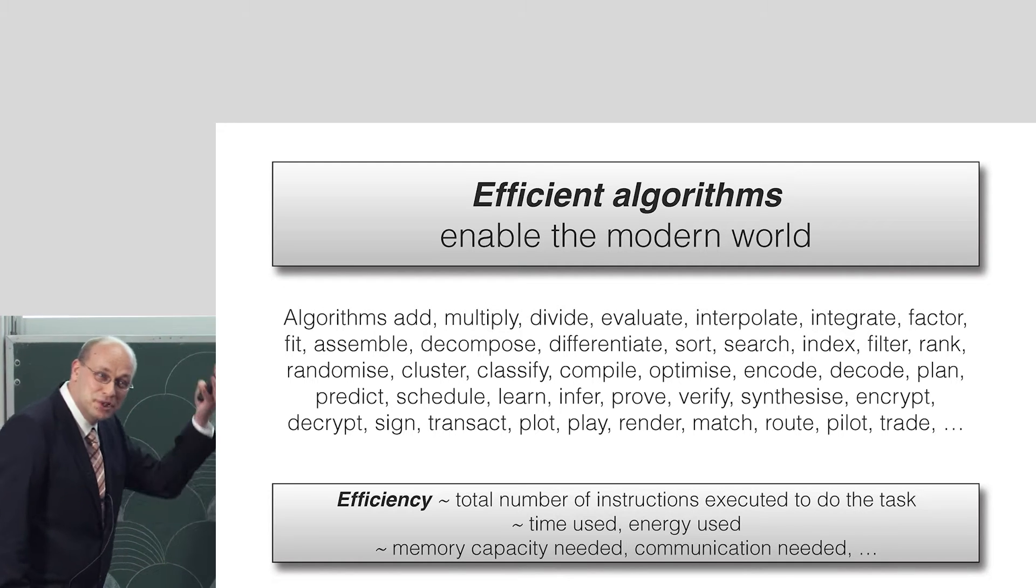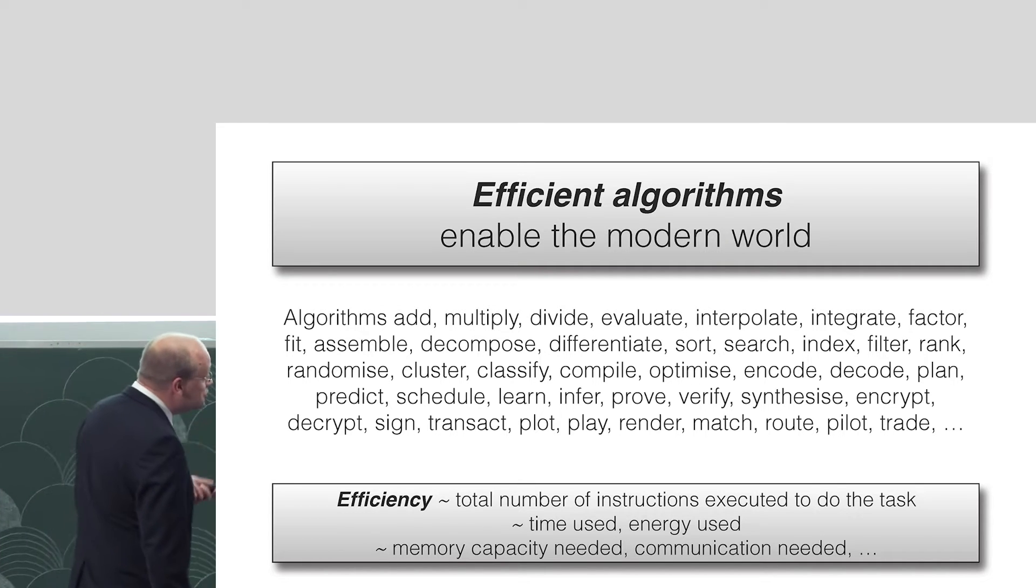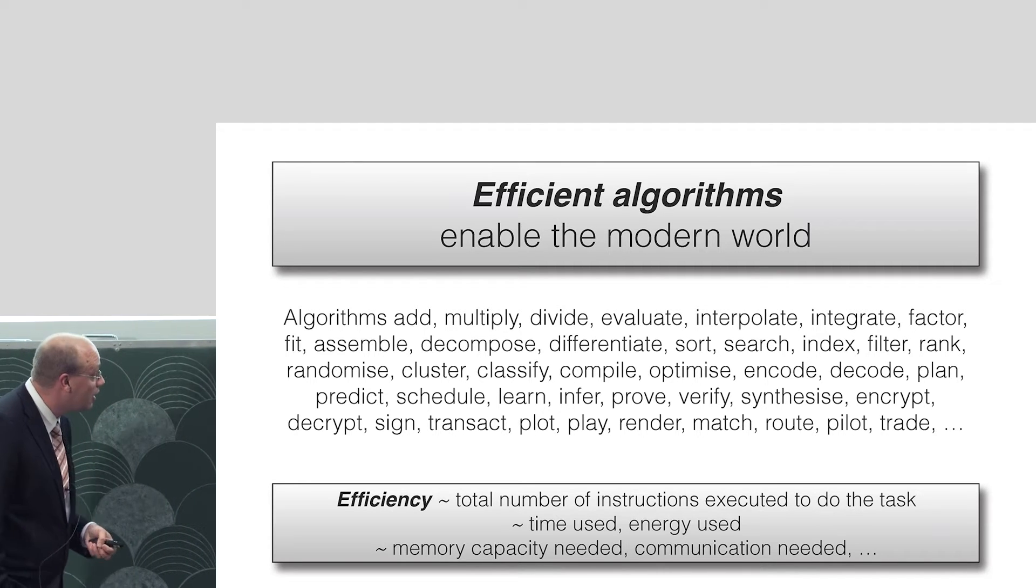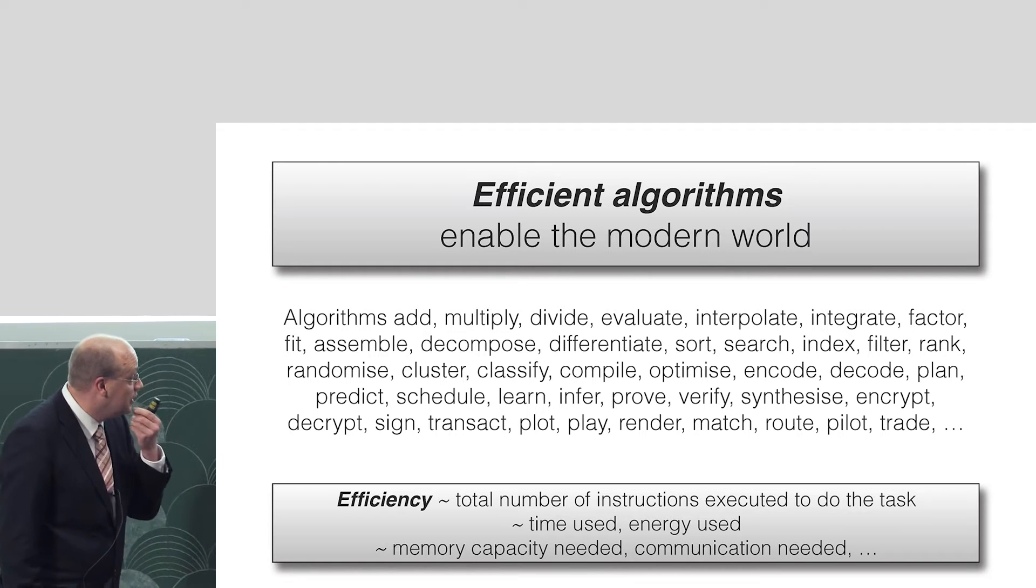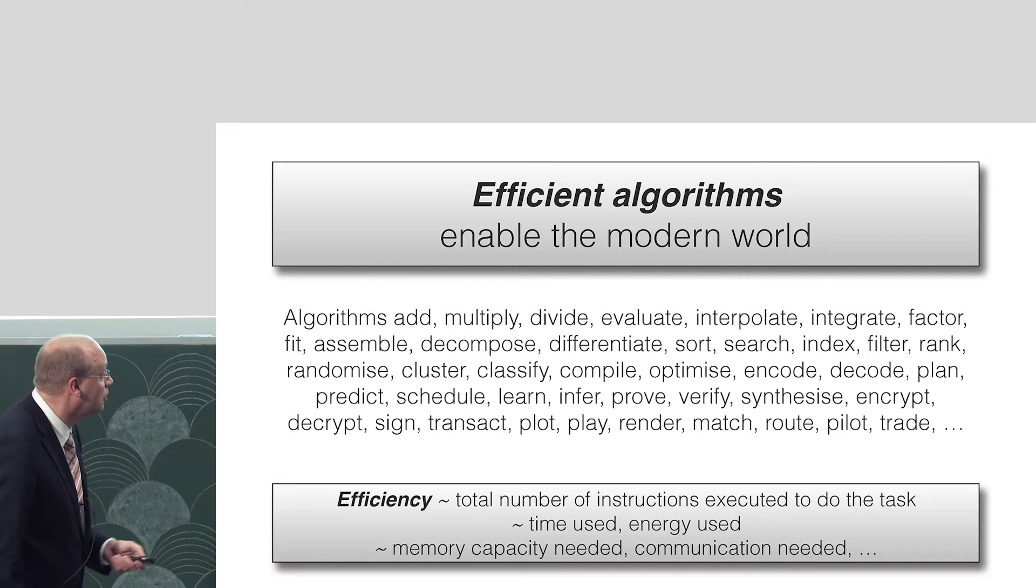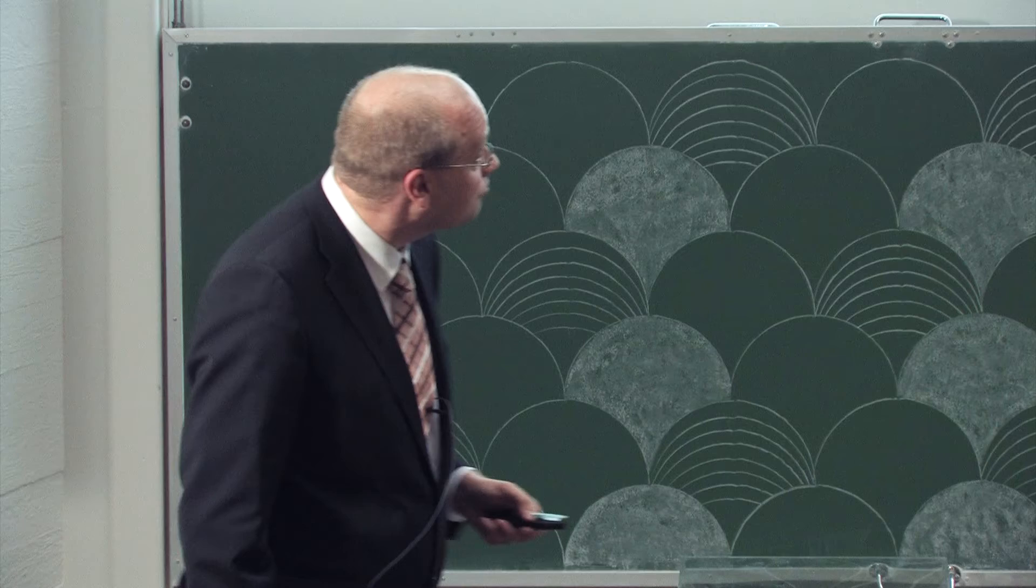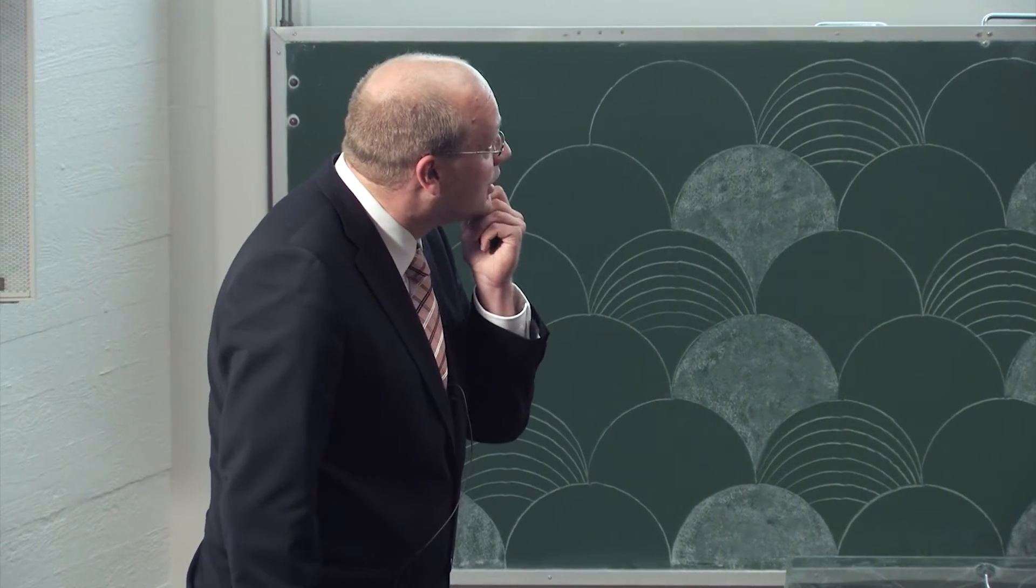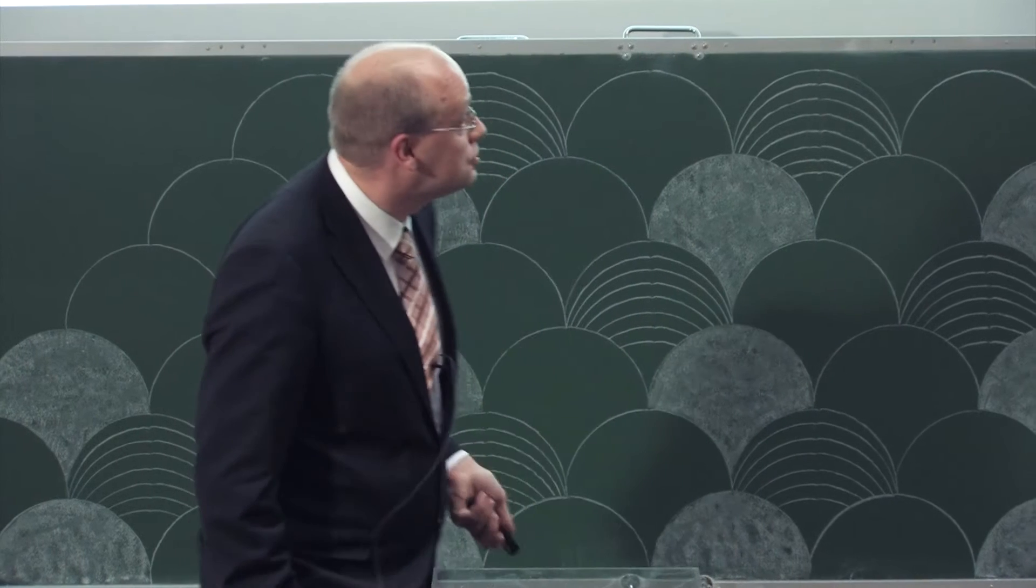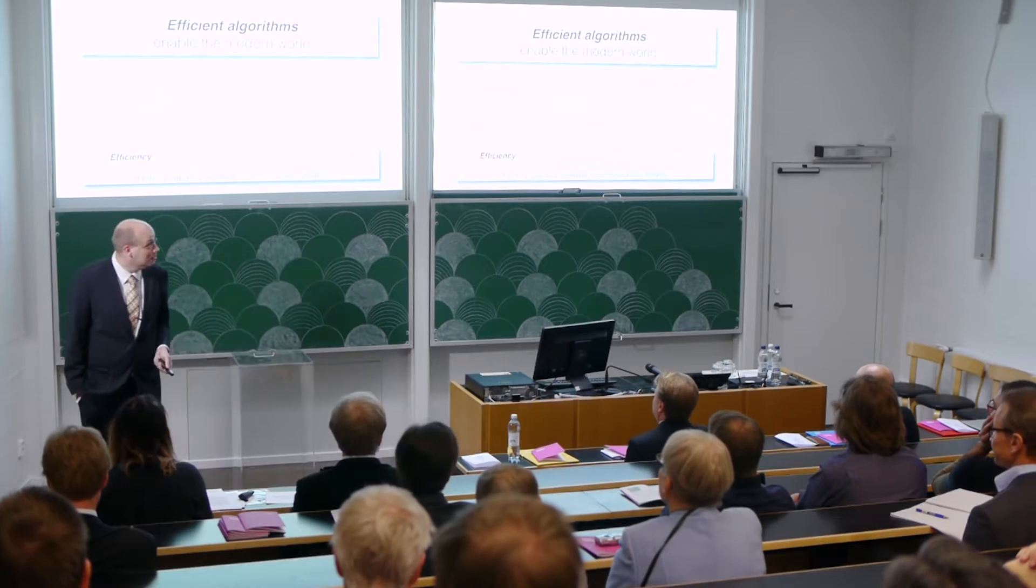We need to specify these individual instructions that we execute at these mind-boggling rates. We measure efficiency by the total number of instructions that actually you execute to get the task done. Equally well, we can measure the running time, the energy we use in terms of joules, or memory capacity, communication, and what not. Algorithms are designed to solve specific tasks. Let's say multiply two integers, divide two integers, or maybe do some electronic signing for purposes of contracting.